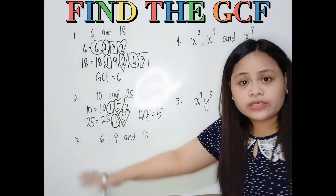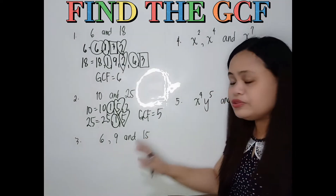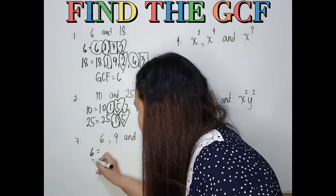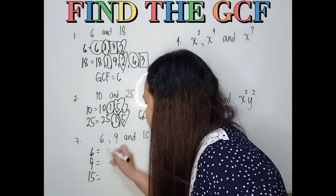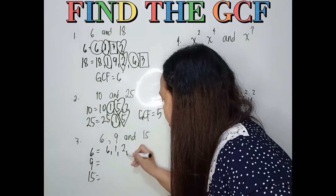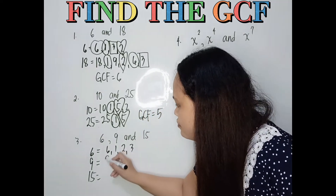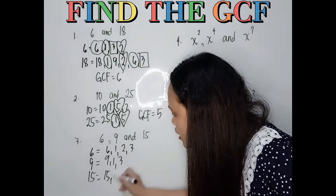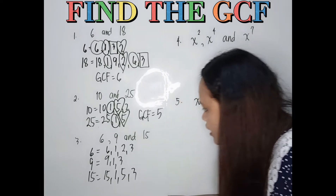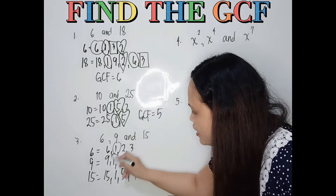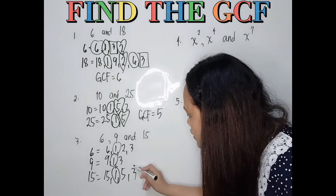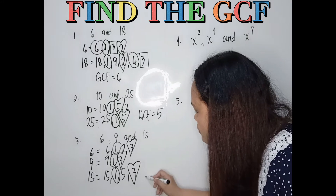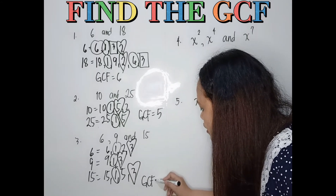In number 3, there are 3 numbers: 6, 9, and 15. You will do the same thing — list all the factors of each. For 6: 6 times 1, 2 times 3. For 9: 9 times 1, 3 times 3. For 15: 15 times 1, 5 times 3. The common factors are 1 and 3. But the greatest is 3, so the GCF here is 3.